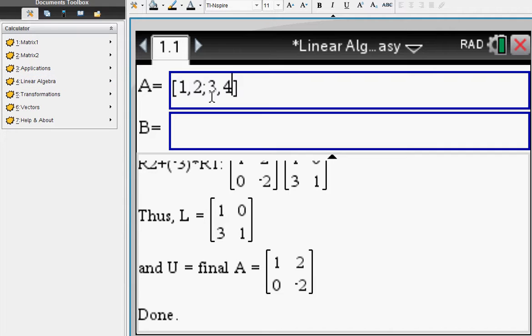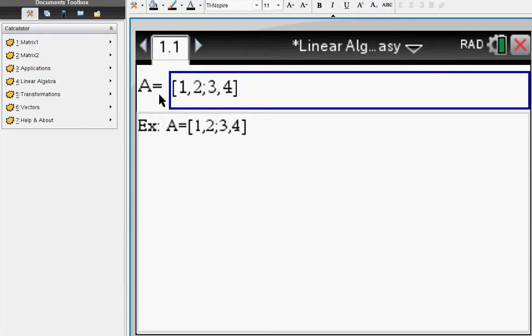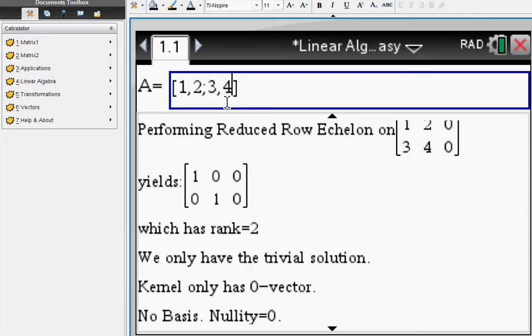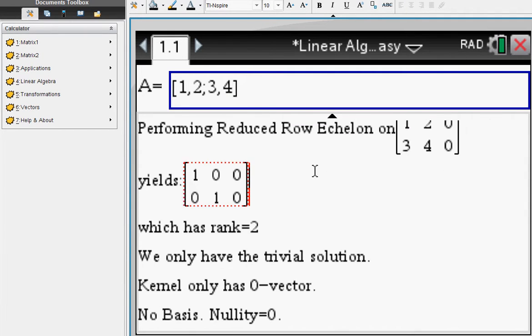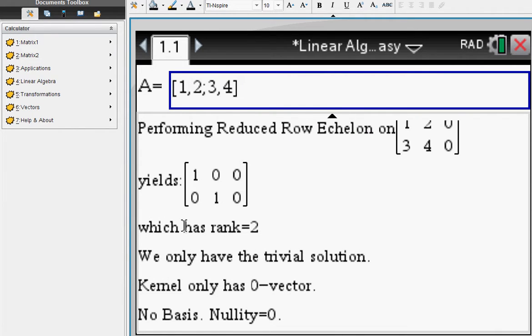Linear algebra - find kernel. Enter one, two, three, four. You do your reduced row echelon computation and you end up with a rank of 2, which means your kernel only contains the zero vector. The nullity would be zero.